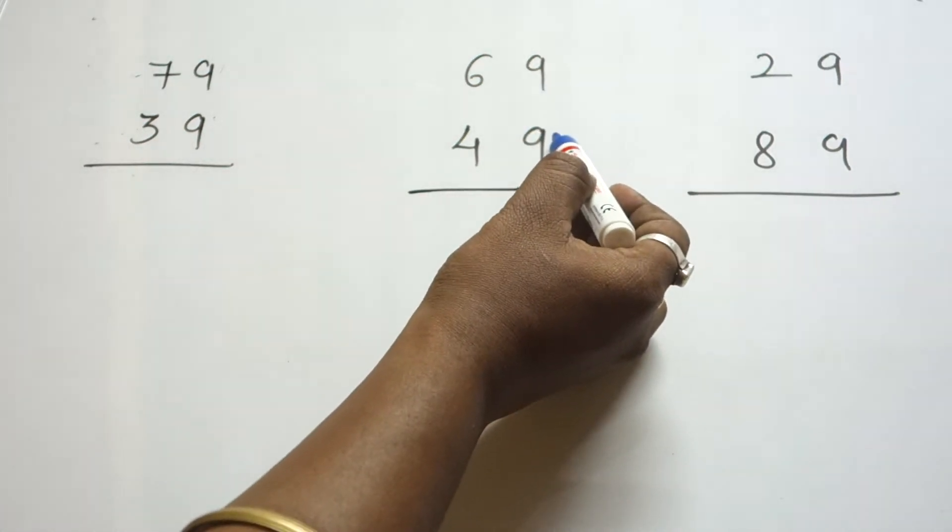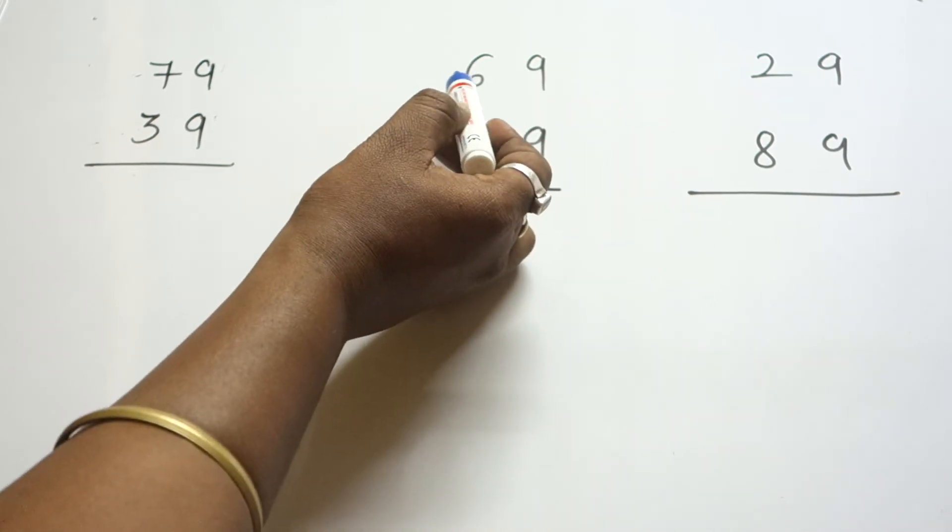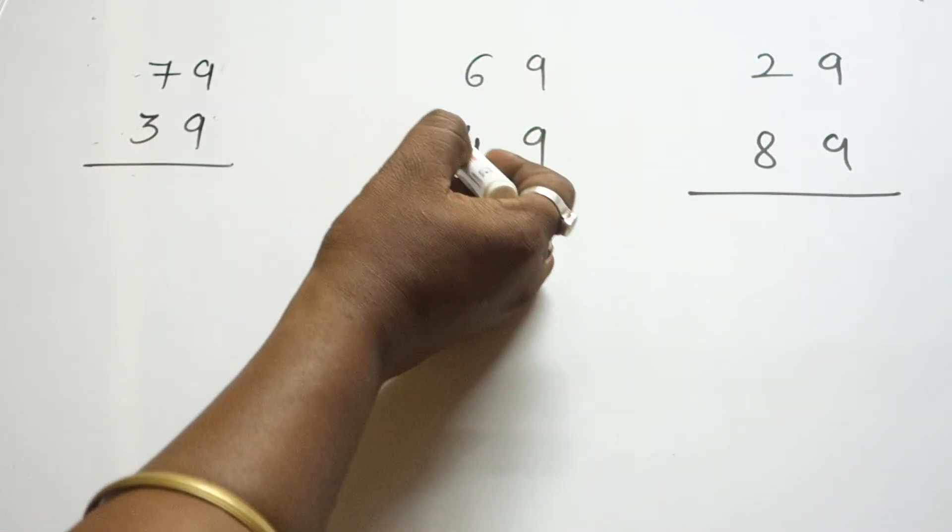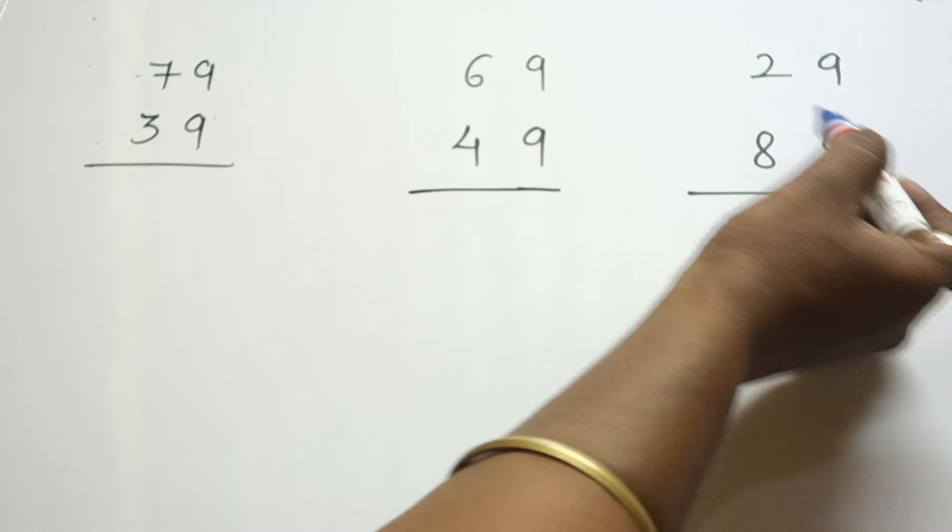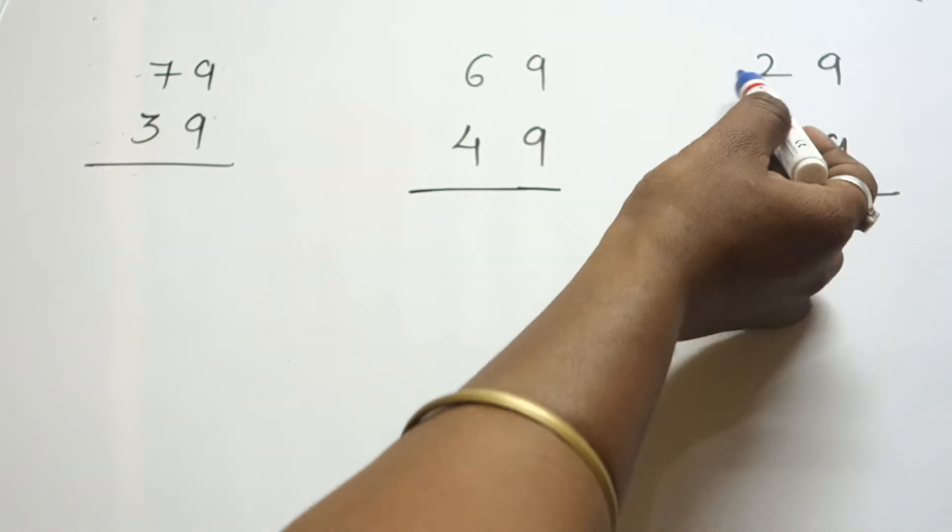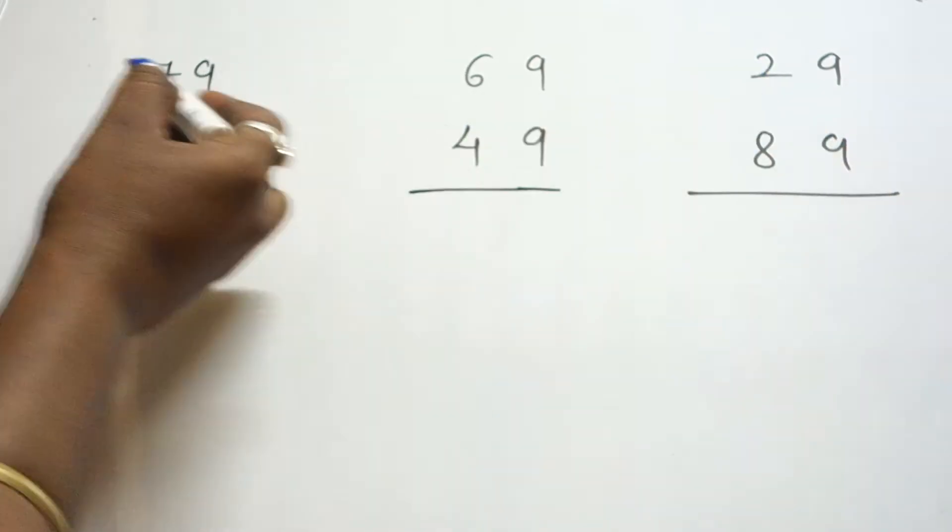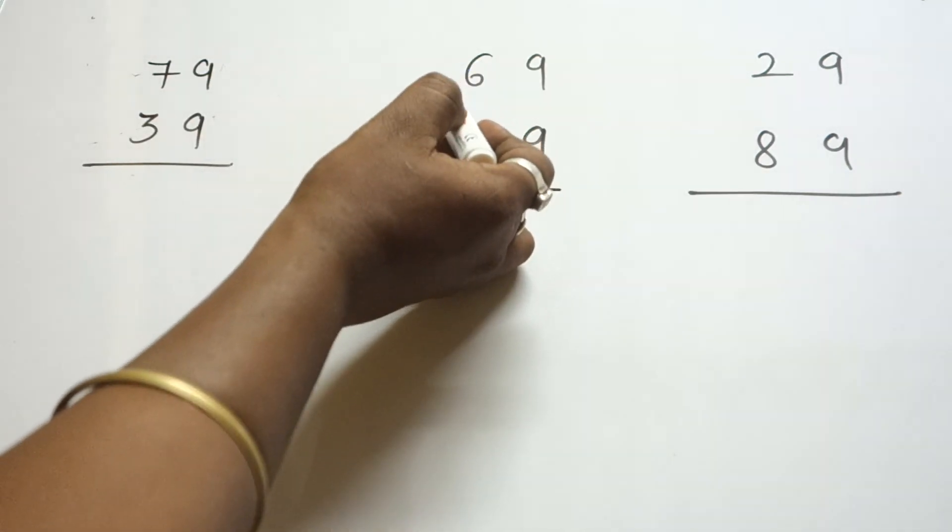Here again, unit place is 9 and sum of the tens place should be equal to 10. Like 7 plus 3 is 10, 6 plus 4 is 10, 2 plus 8 is 10.